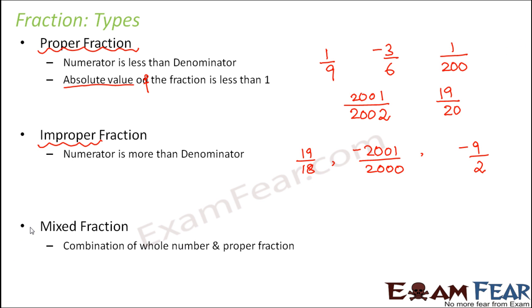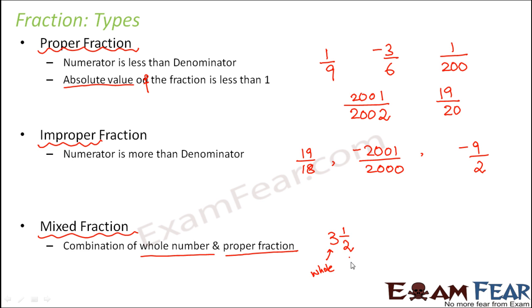The last type is a mixed fraction, which is neither a proper fraction nor an improper fraction. It is basically a combination of a whole number and a proper fraction. For example, 3 and 1/2 — here 3 is a whole number and 1/2 is a proper fraction. So 3 and 1/2 as a whole is a mixed fraction.